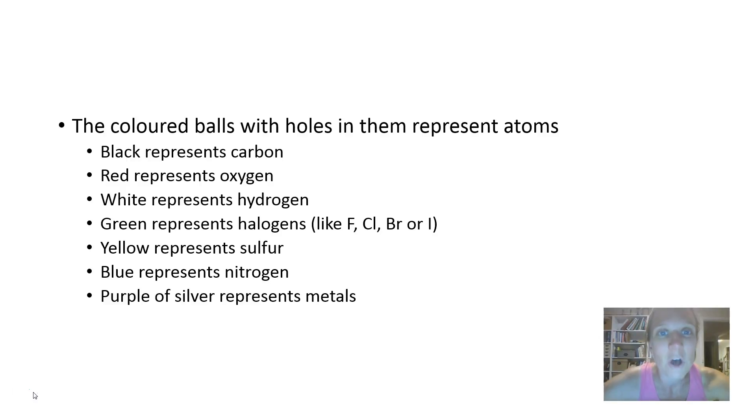The red ones represent oxygen. The white ones represent hydrogen. The green balls represent halogens like fluorine, chlorine, bromine or iodine. Yellow represents sulphur. Blue represents nitrogen. And the purple or silver is generally used to represent metals.